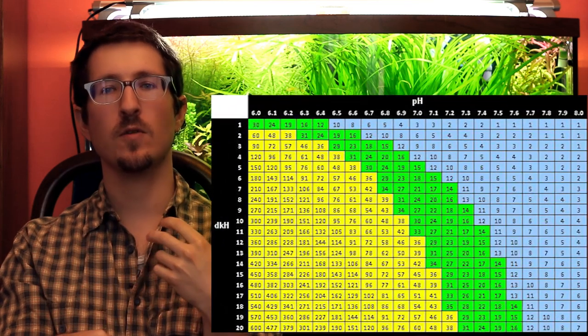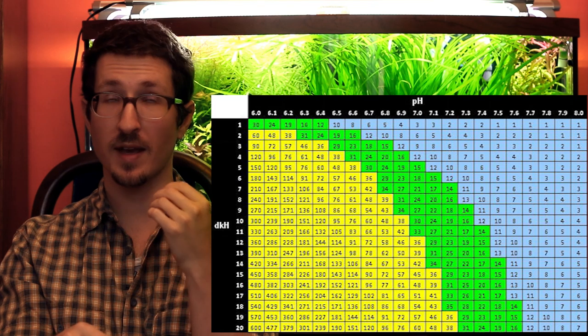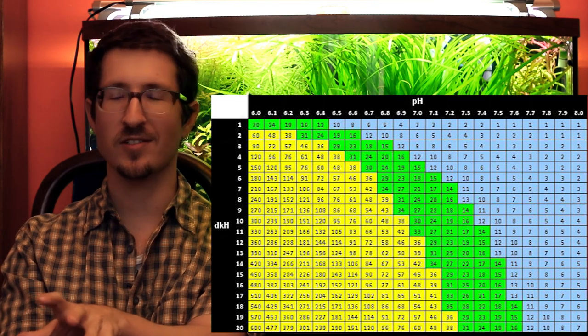And finally, while some folks use tables to calculate CO2 based on pH and KH, the truth is that you can't accurately determine how much CO2 is in your typical aquarium by measuring pH and KH. There's really too many other variables. So honestly, with all the amazing technology we have, the best method is really to use your eyes and your brain. It just takes some careful trial and error.